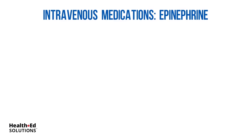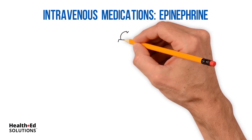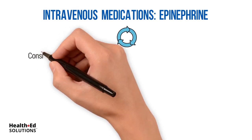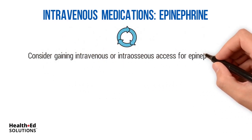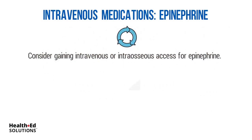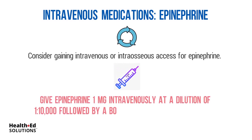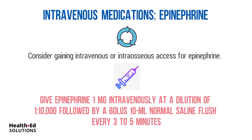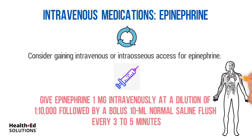Intravenous medications — Epinephrine: Repeat the circular algorithm and consider gaining intravenous or intraosseous access for epinephrine. Once access is established, give epinephrine 1 milligram intravenously at a dilution of 1 in 10,000, followed by a 10 milliliter normal saline flush, every 3 to 5 minutes. It is recommended to elevate the extremity where IV access is in place while administering drugs, and to administer the drug with chest compressions to facilitate flow to the central circulation.